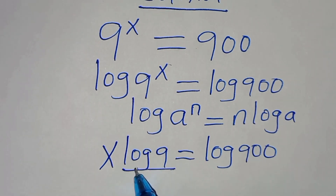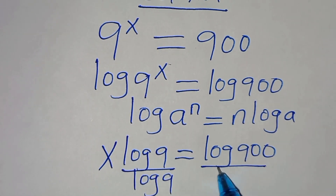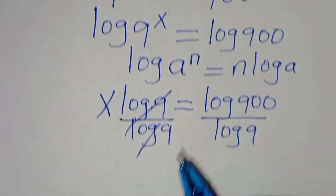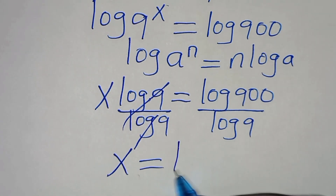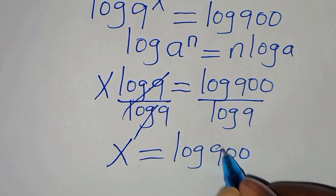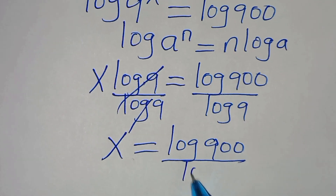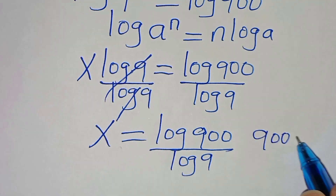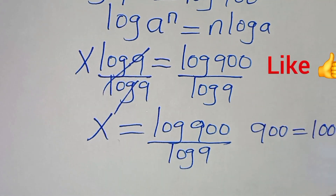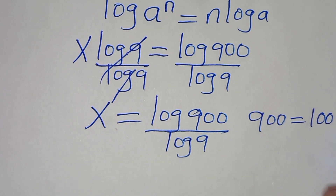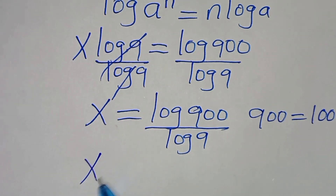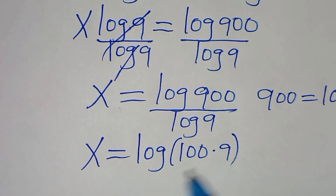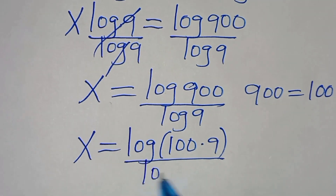Therefore, let's divide both sides by log 9, so that x is equal to log 900 divided by log 9. The next step is to express 900, this is the same thing as 100 times 9, so that x is equal to log(100 times 9), everything divided by log 9.